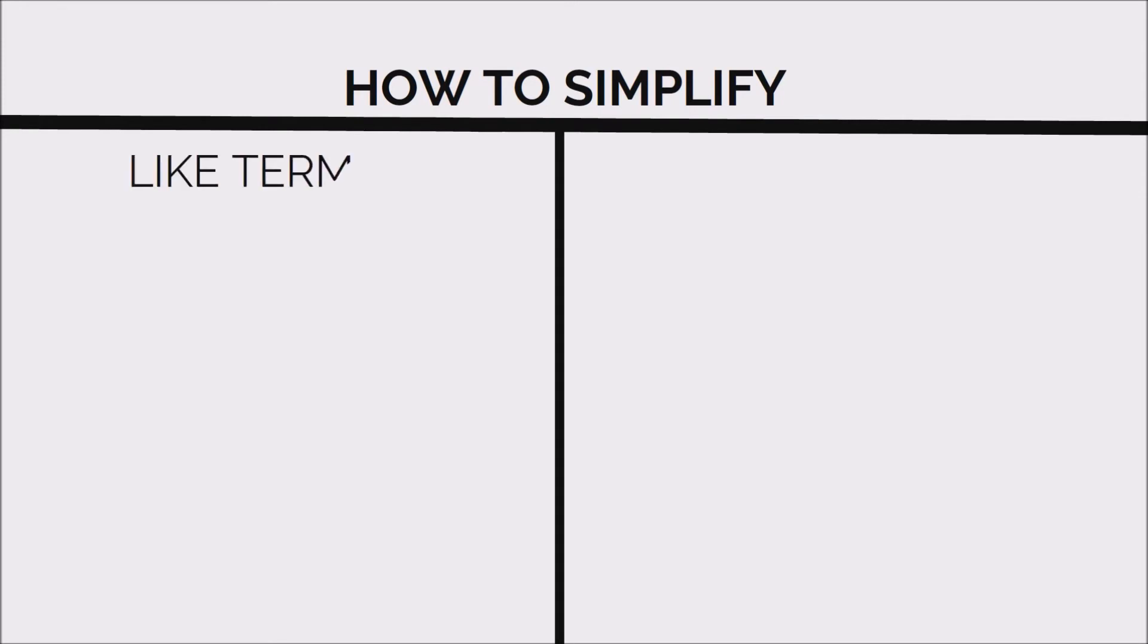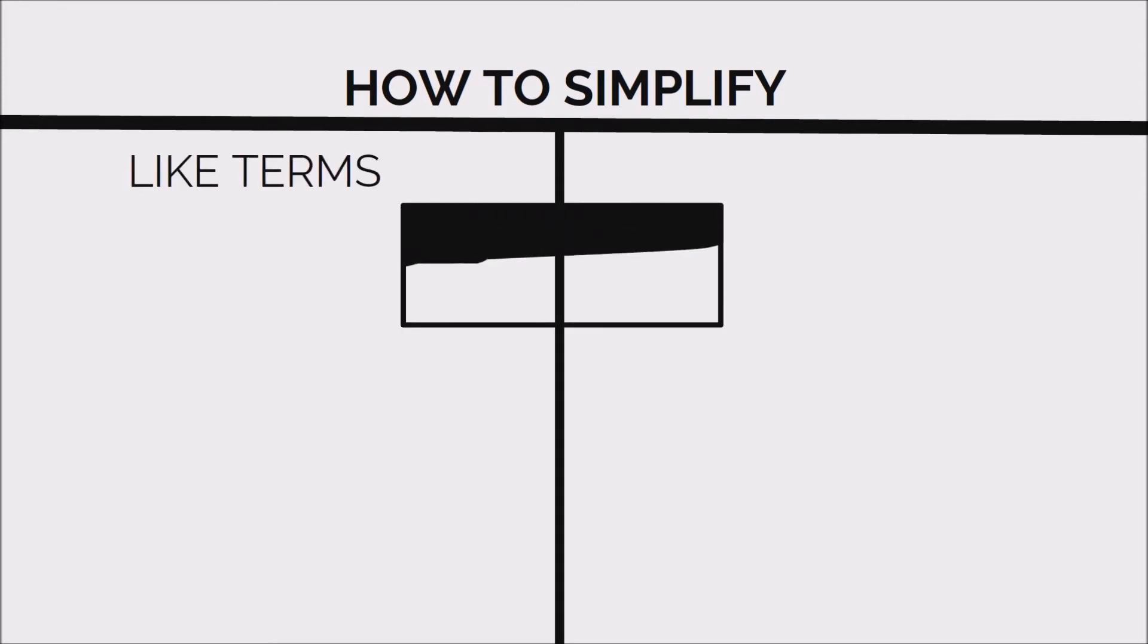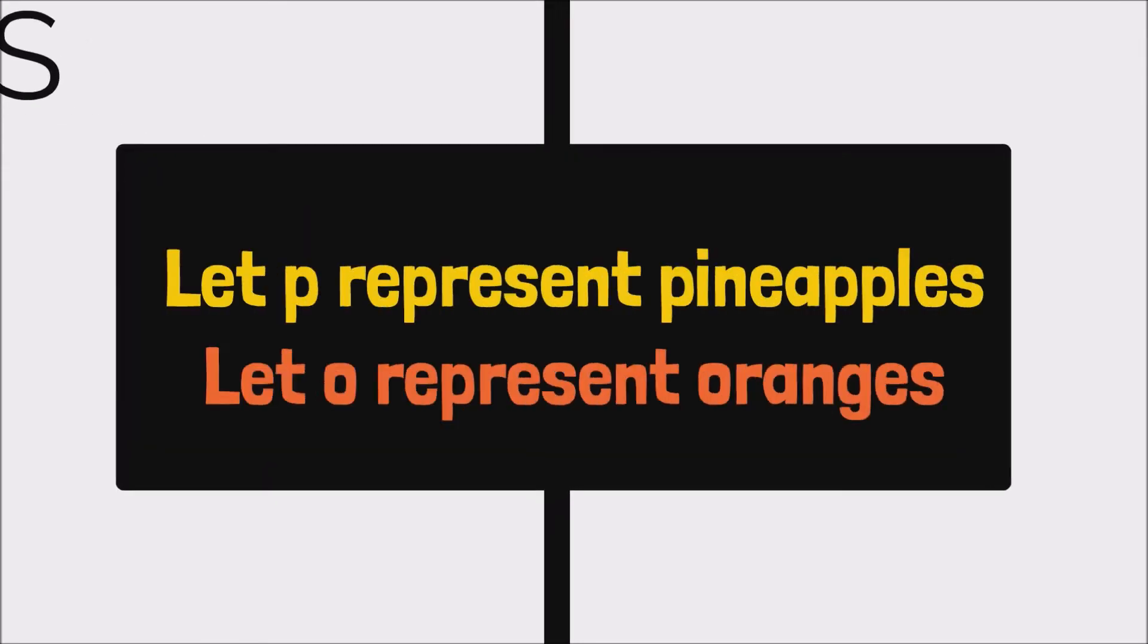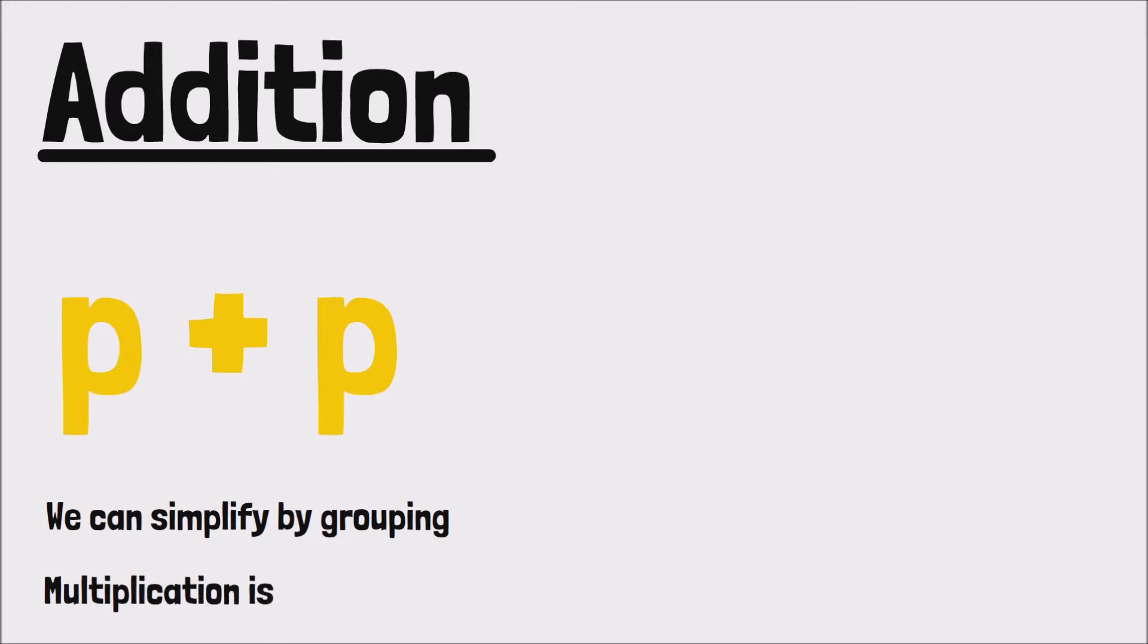Now I'm going to be using an example I did previously with pineapples and oranges, where P represents pineapples and O represents oranges. So let's go. Now with addition, here's our first example. Here we have two like terms that we're adding. Now when adding like terms, we can always simplify using the idea of grouping or multiplication. In a volume 1 video, I spoke about multiplication being the shortcut for addition, and it's based on the idea of adding the same group a number of times.